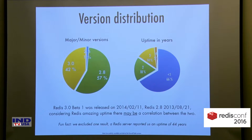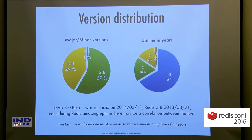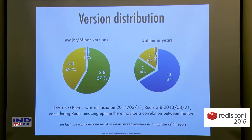The overall Redis uptime on production systems was an interesting discovery. Redis has always been well known for its reliability and the data we gather confirms it. As you can see, there may be a correlation between the two — at least that's the conclusion we had looking from other dimensions.